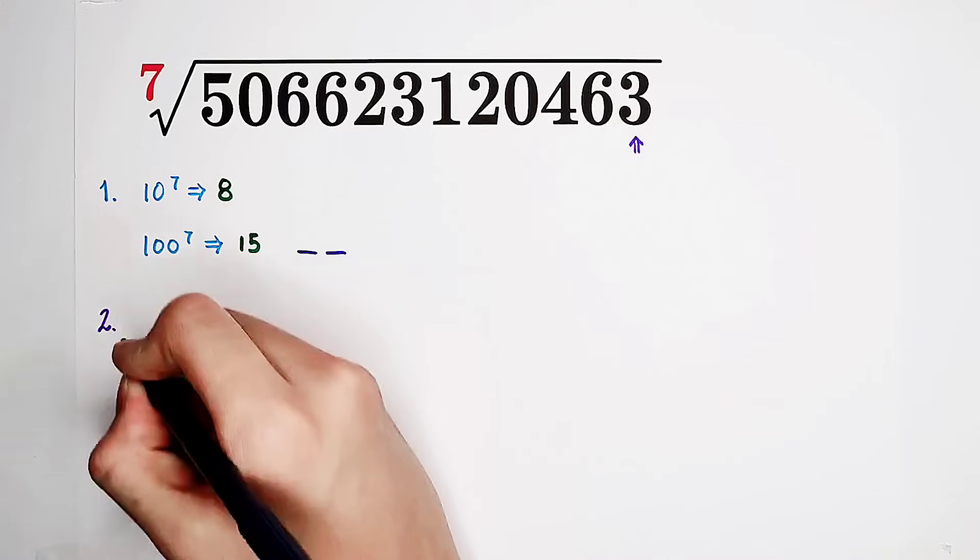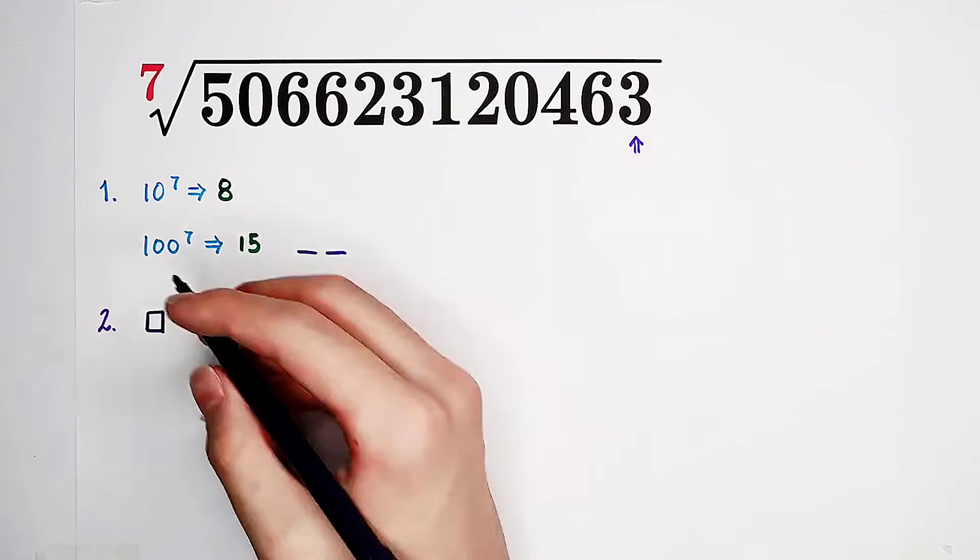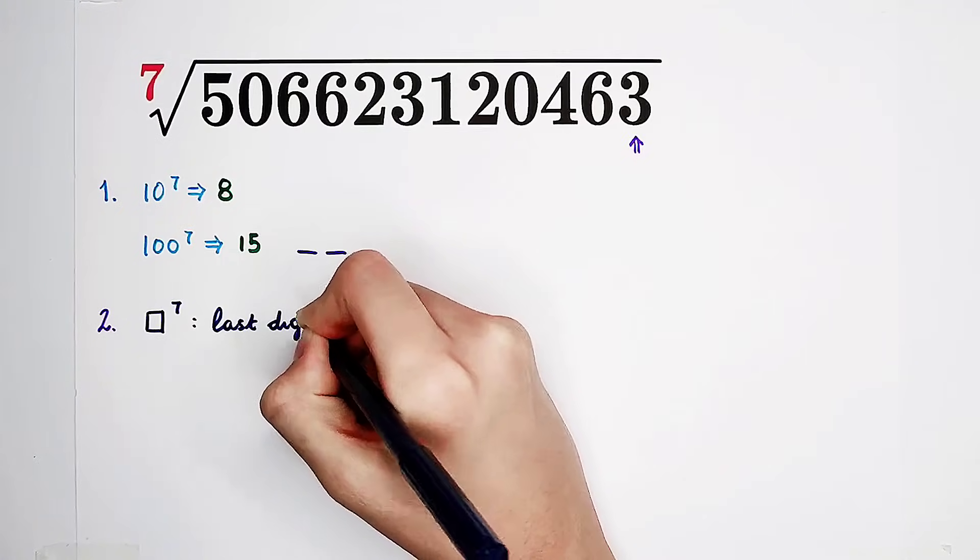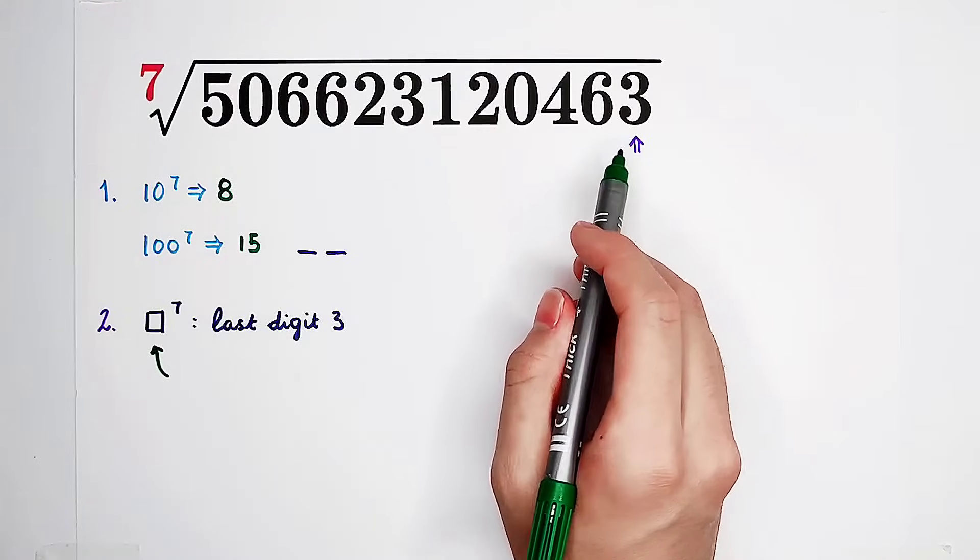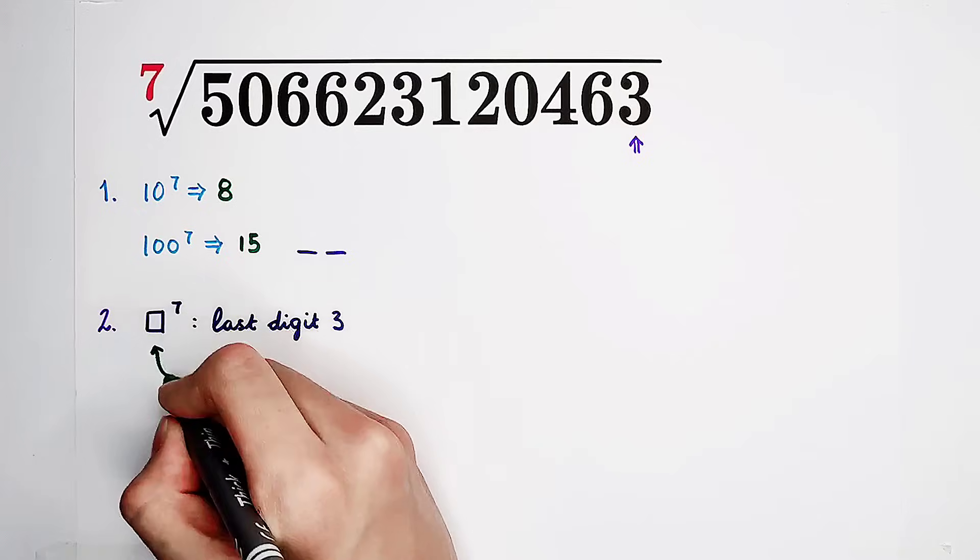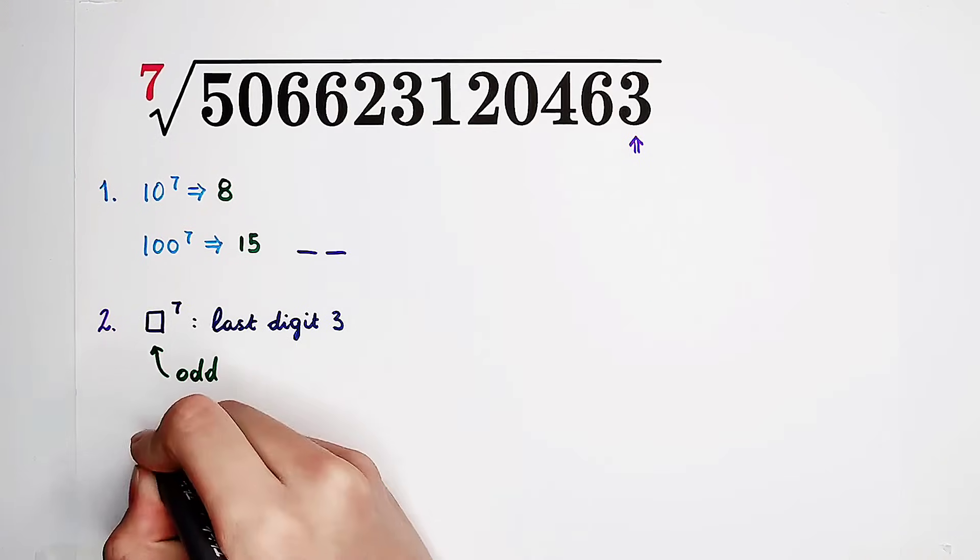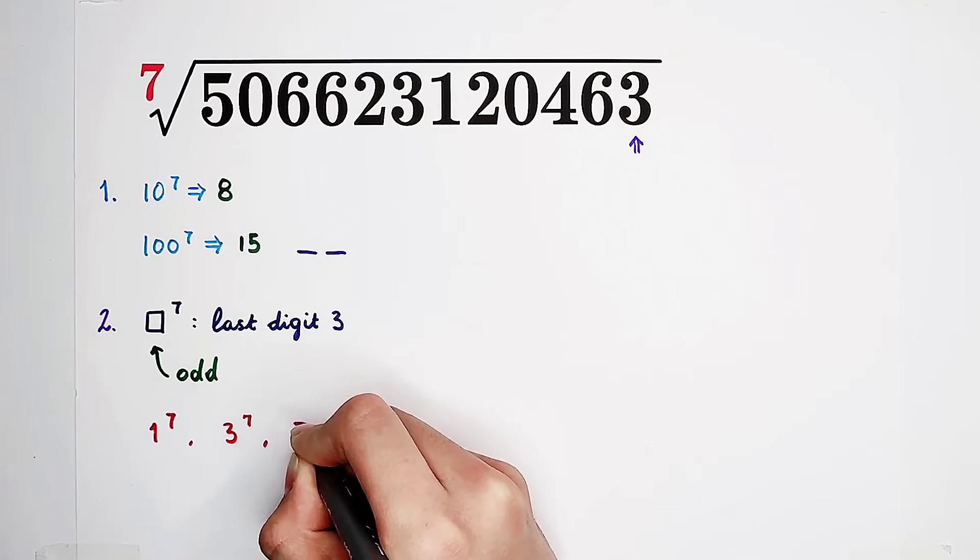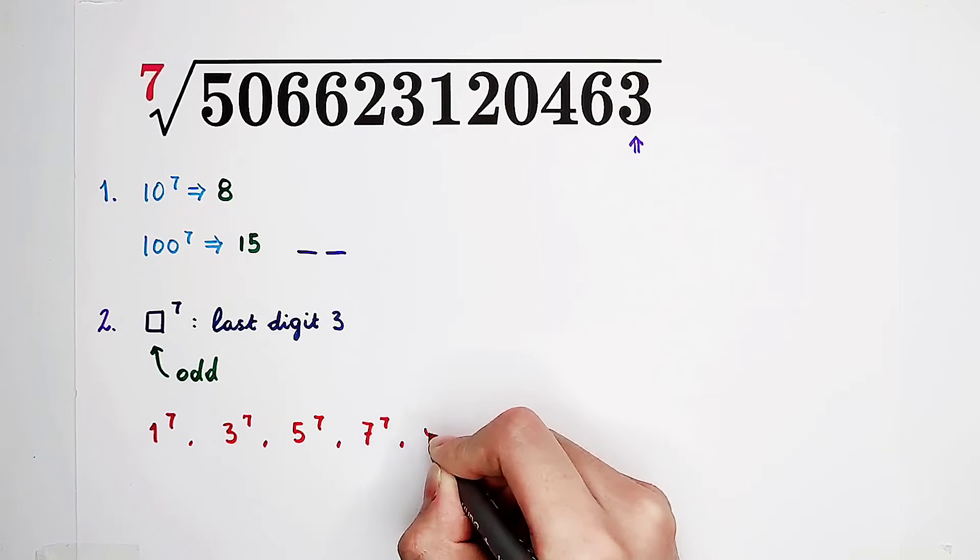However, if we are clever, I say only a few cases. We want to find which number to the power of 7 has the last digit 3. And we know 3 is an odd number, so that means our number on the base should be odd. Only an odd number to the power of 7 can be odd. So now we have only 5 cases: 1 to the power of 7, 3 to the power of 7, 5 to the power of 7, 7 to the power of 7, and 9 to the power of 7.